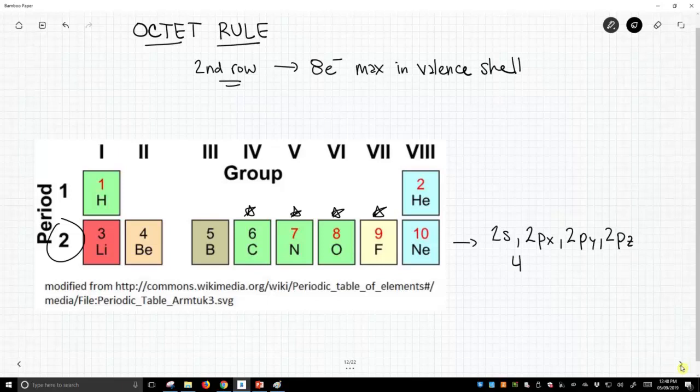So that's four orbitals within our valence shell, and then there's a rule that you can only fit two electrons per orbital.